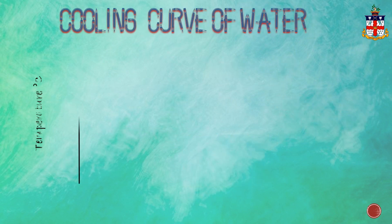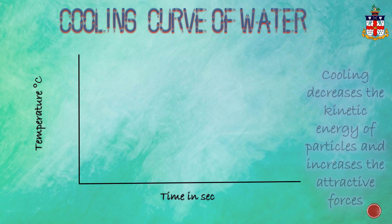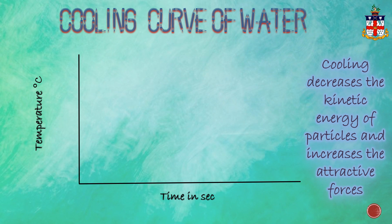The cooling curve of water shows temperature changes recorded at intervals on cooling the water vapors back to ice. Cooling decreases the kinetic energy of the particles and increases the attractive forces present between them. The cooling curve is the mirror image of the heating curve. When the water vapors are cooled, the temperature decreases to a certain point and then becomes constant.